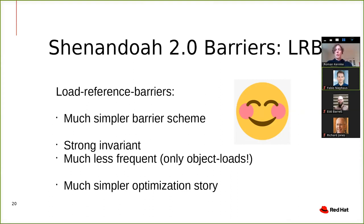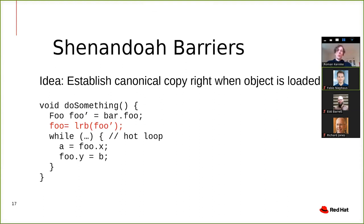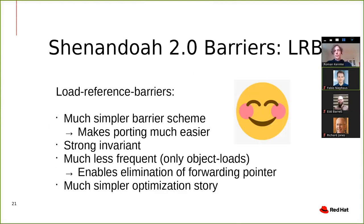Overall, it looks much simpler now: we have the load reference barrier, the compare-and-swap barrier, and still an array copy barrier — also simpler than before. It's a much simpler scheme. It's also easier to reason about because we establish a strong invariant. The barriers are much less frequent because they're only on object loads, not primitive loads. The optimization story is much simpler because barriers are naturally placed outside hot loops. The simpler barrier scheme makes porting much easier with far less platform-specific code. Much less frequent barriers also enables us to eliminate the forwarding pointer — I'll get to that shortly.